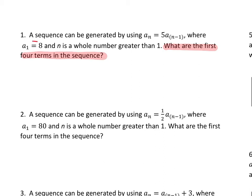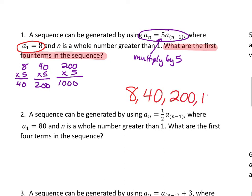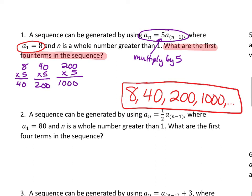Right away I can tell you what the first term in the sequence is. A sub 1 says in the first position we have the number 8. And then this pattern — a sub n equal to 5 times a sub n minus 1 — says take the one before it and multiply by 5. 8 times 5 is 40. Then 40 times 5, that's the one before, that's 200. Take the one before, which is 200, and multiply it by 5 — that's going to be 1,000. So my sequence is 8, 40, 200, 1,000, and so on. Those are the first four terms in this sequence that says to multiply by 5 for every term before.